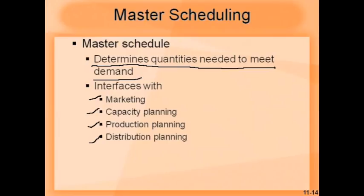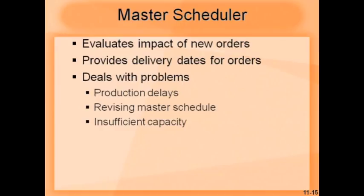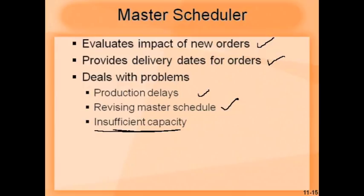The job of a master scheduler is to evaluate the impact of new orders. When a plan is already in place for a week, month, or two months, and new orders come in, the scheduler evaluates where they fit and whether the order can be fulfilled. They provide delivery dates for orders. They also deal with production delays — if a critical machine breaks down, the master schedule is revised accordingly. If there is insufficient capacity, production and marketing must be alerted in advance so there is no major problem with key customers.